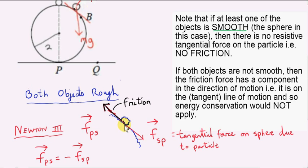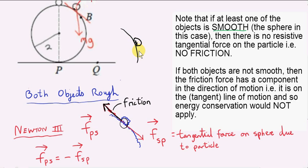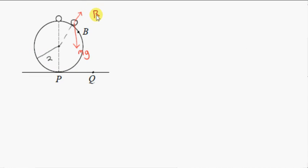Since the sphere is smooth, even if the particle were rough, we see that we don't have any friction force on the particle. The magnitude of the contact force vector is R.